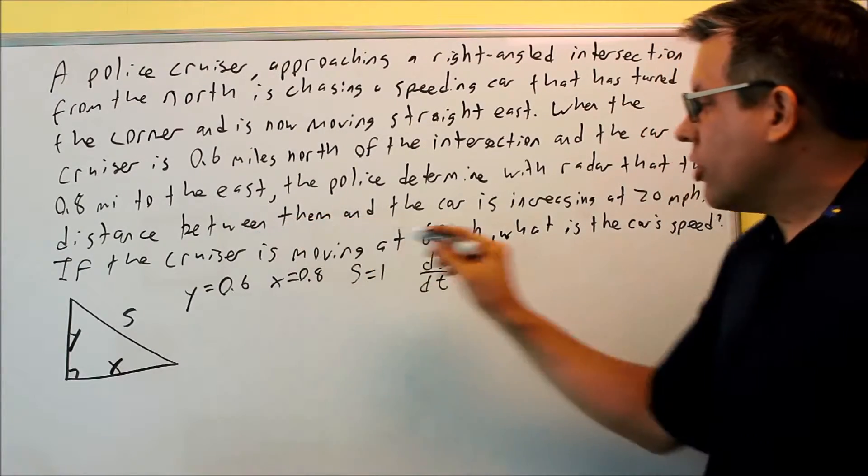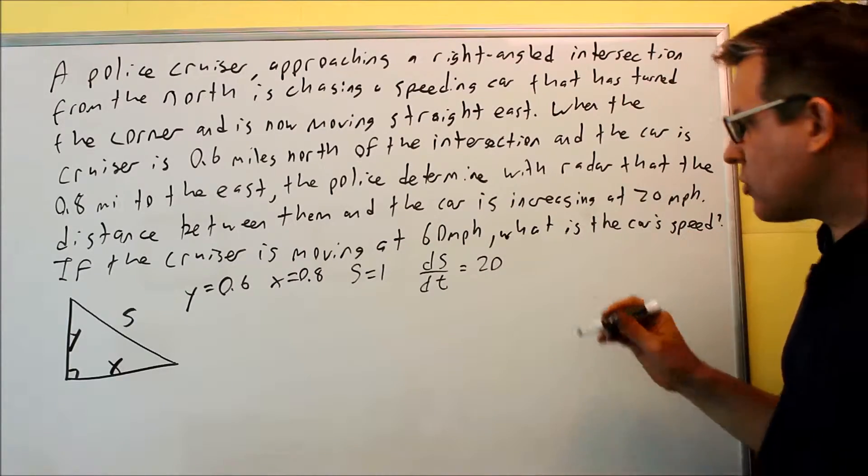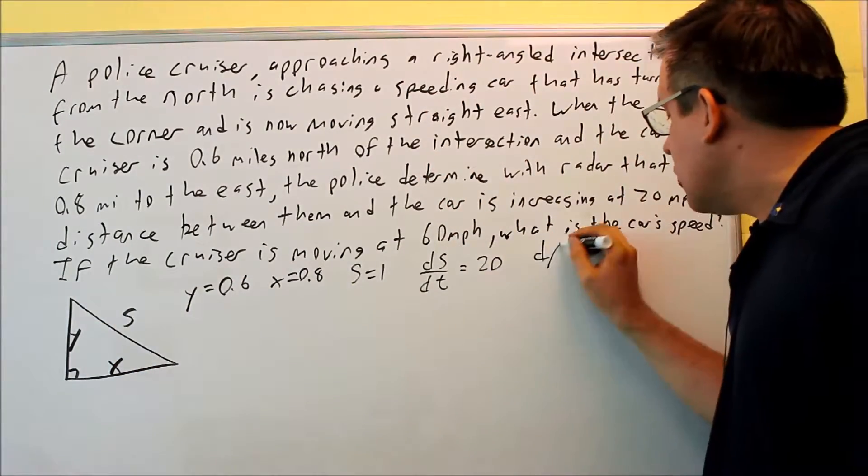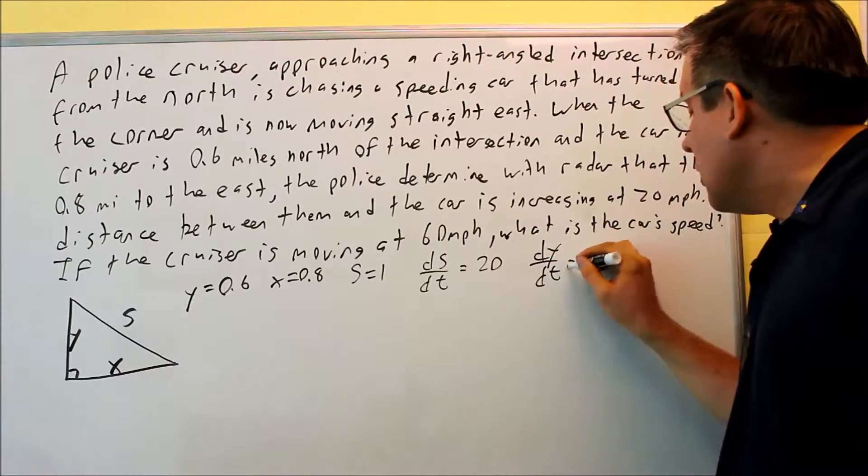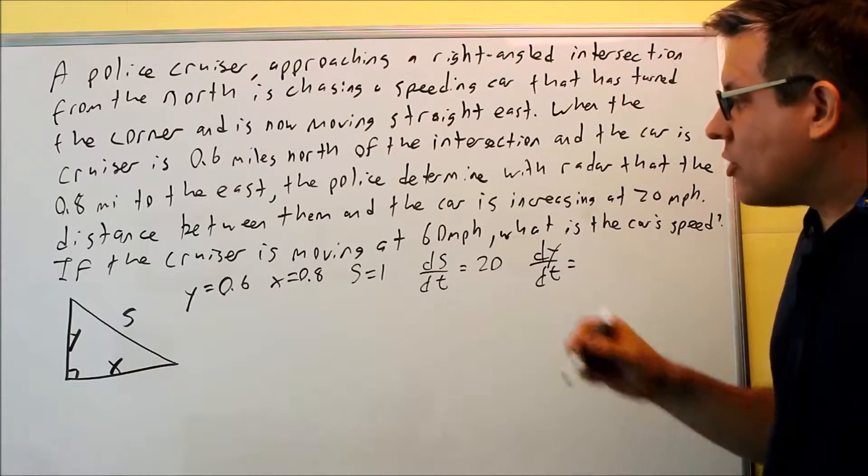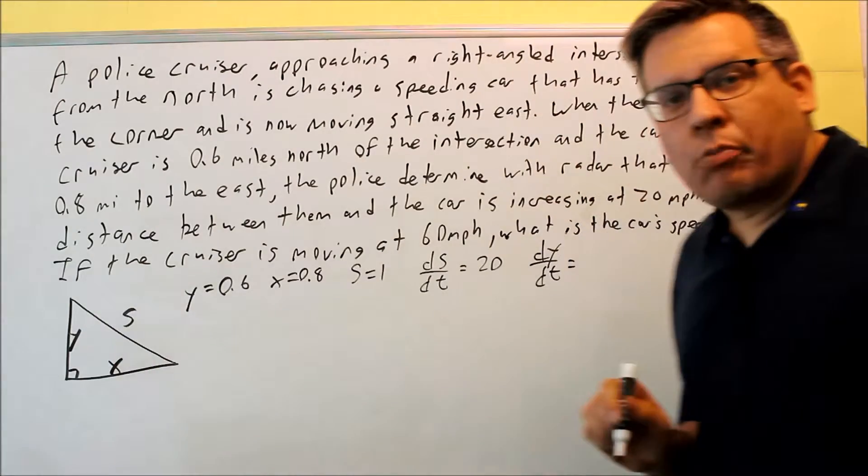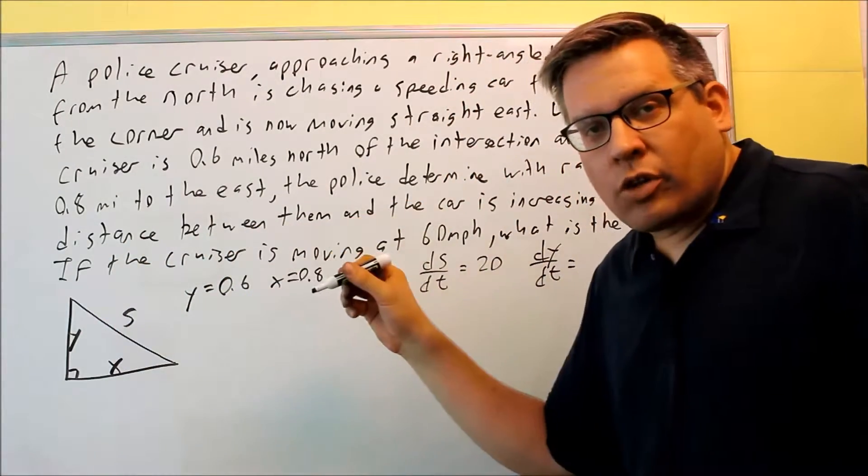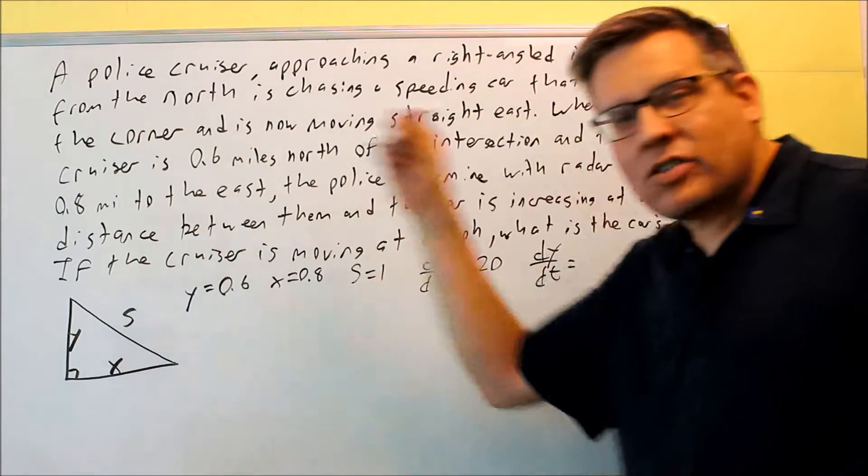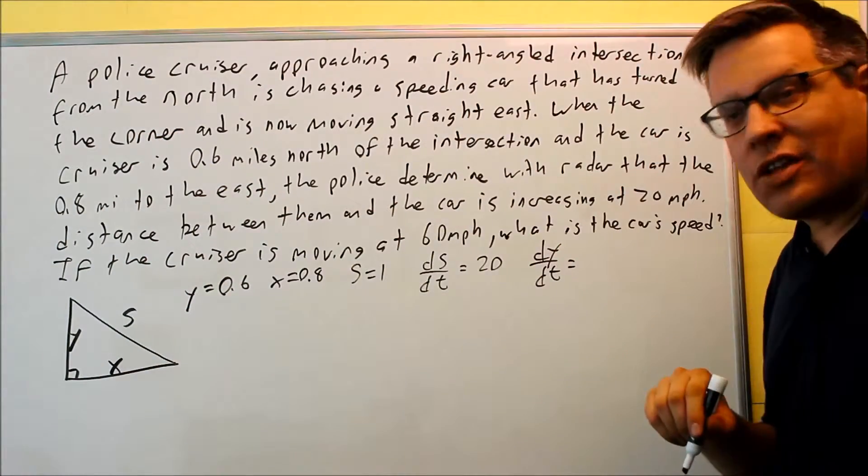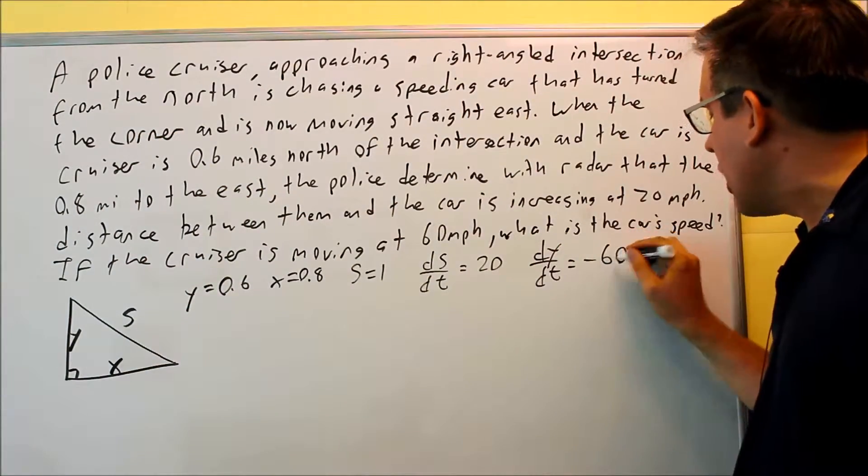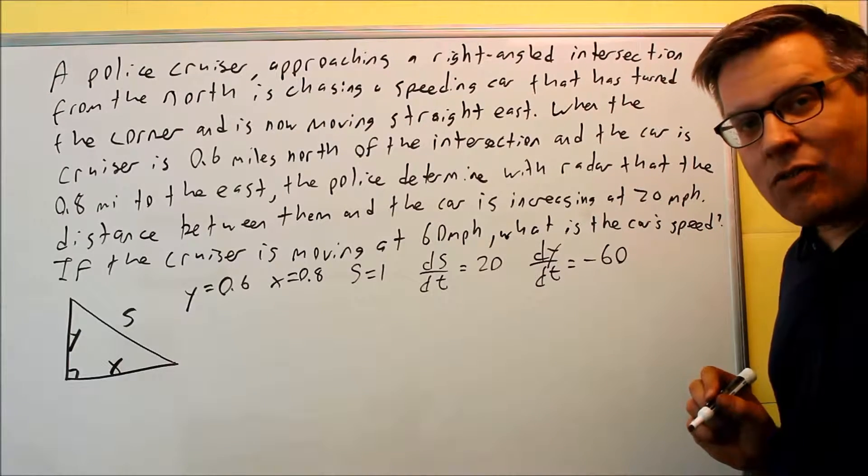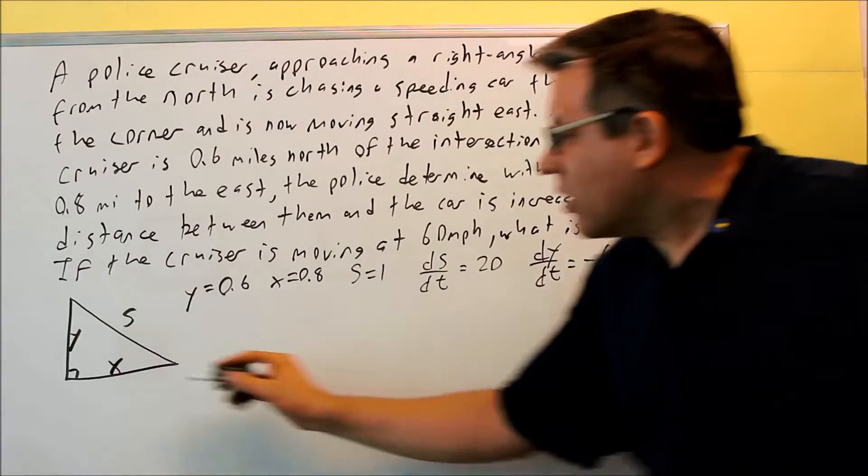The cruiser is moving at 60 miles per hour. The cruiser is the Y variable, so that's DY/DT. Now, it's moving down, remember. So, the way I have this set up here, if I'm working with a regular graphing system, every time I have something moving down, that's moving in the negative direction. So you've got to be really careful. Your DY/DT has got to be negative 60 in this case because it's moving down.